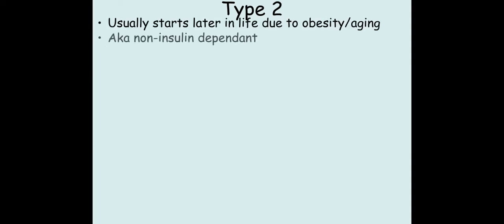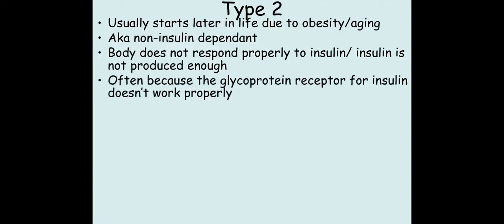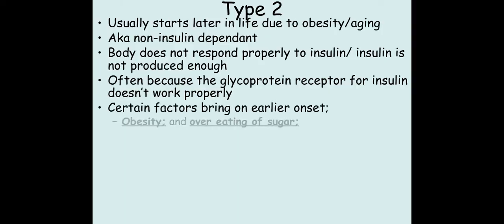Type 2 normally arises later in life due to obesity or aging. It's non-insulin dependent. Your body doesn't function properly towards the insulin, so you still make the insulin but your body doesn't respond to it. This is usually because the receptor that detects insulin has been affected so that it doesn't work properly anymore — it's no longer complementary and specific to insulin.